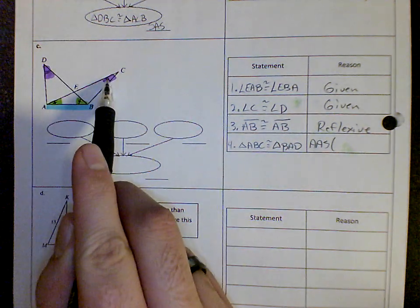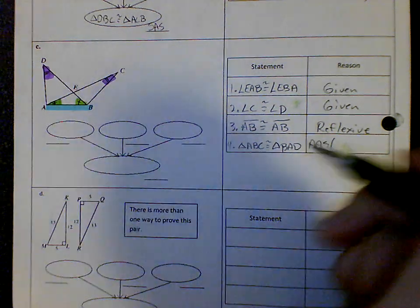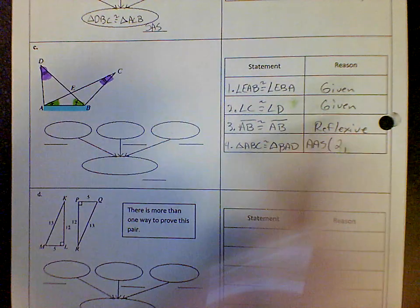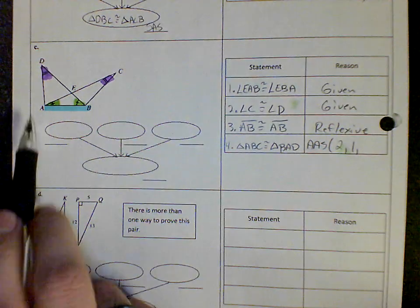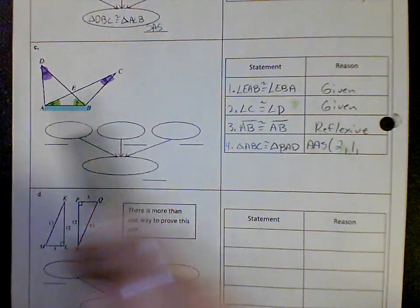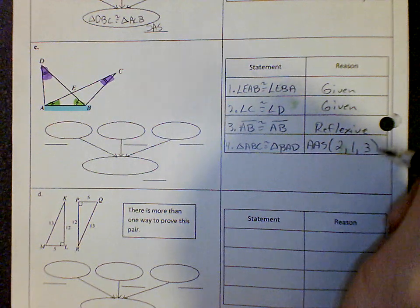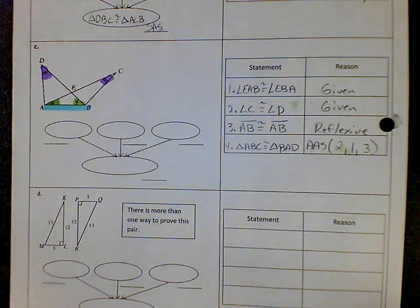So let's start with my first angle, which is the purple one, which would be step two. The next angle is the green one, that's step one. And then the last one is that reflexive property side, which is step three. Two, one, and three.